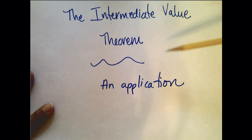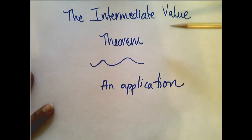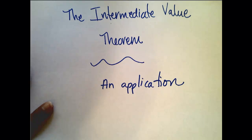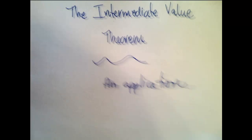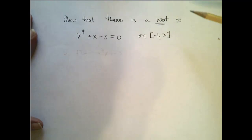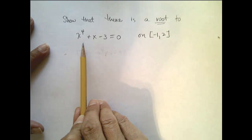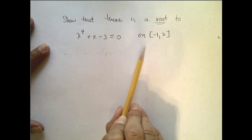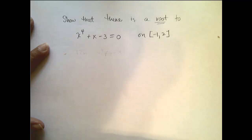In this video, we're going to look at a common application to the Intermediate Value Theorem. Let's show that there is a root to this equation right here, x to the fourth plus x minus 3 equals zero on the closed interval negative 1 to 2.